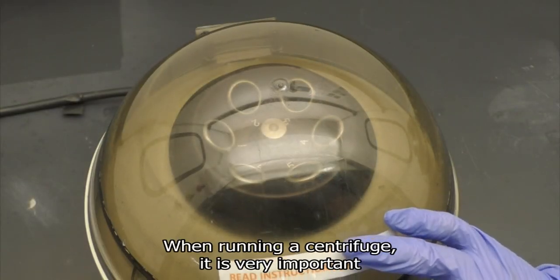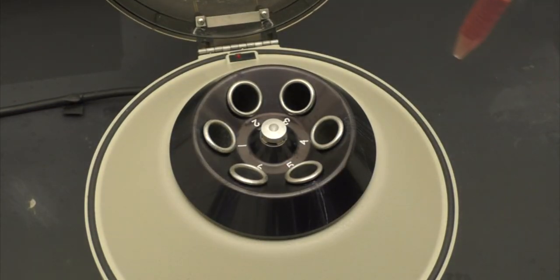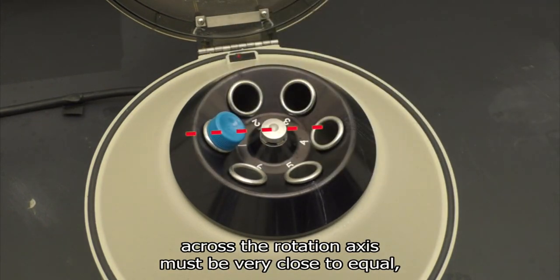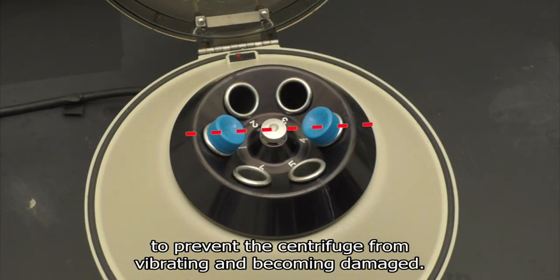When running a centrifuge, it is very important to balance the centrifuge by weight. This is because the weights paired across the rotational axis must be very close to equal to prevent the centrifuge from vibrating and becoming damaged.